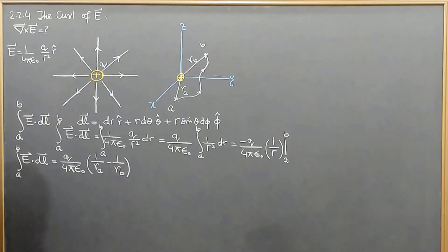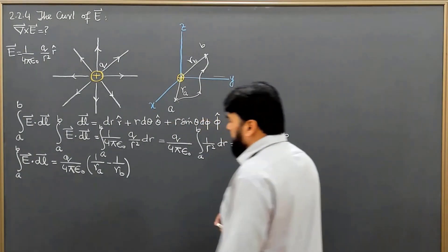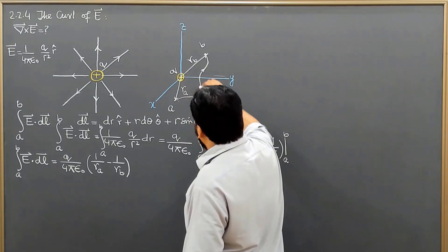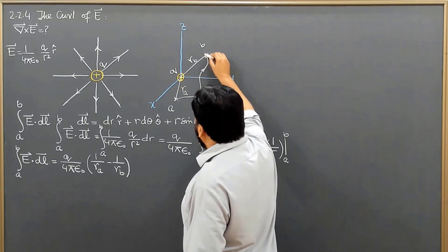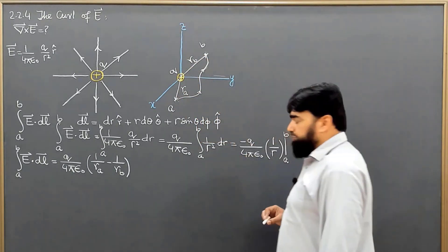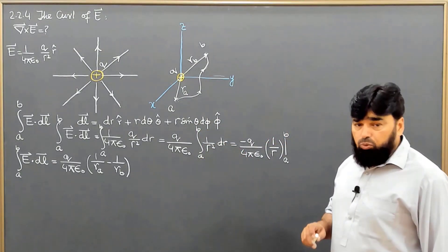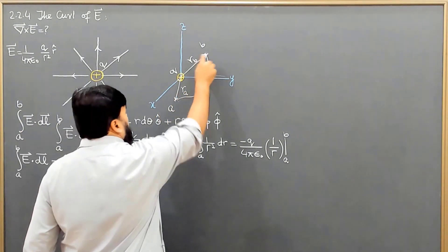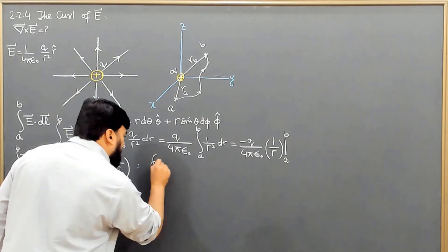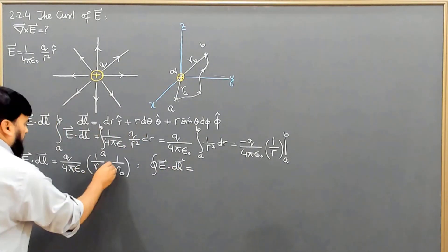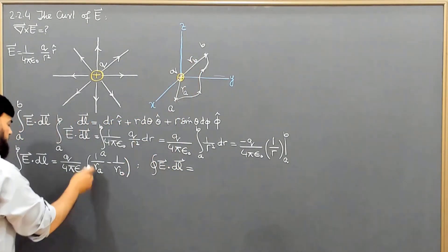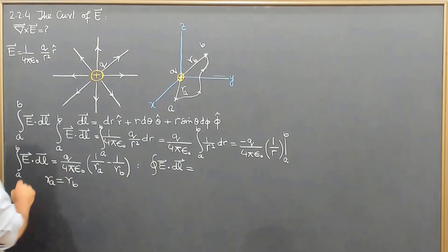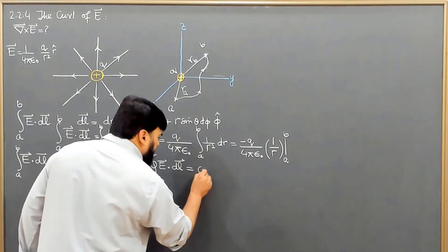Our electric field line integral is equal to this one. We move in this field, due to source charge Q, and reach from A to B. Now whatever way I start from B and come back along this path or any other path and reach here — because the integral takes the endpoints — when I take a closed loop integral, returning to the same point, R_A equals R_B. They are now the same points, and that's why they cancel, giving the closed path integral equal to zero.